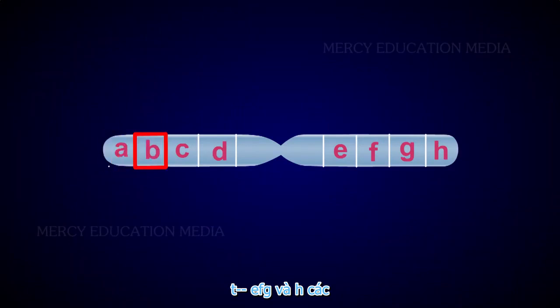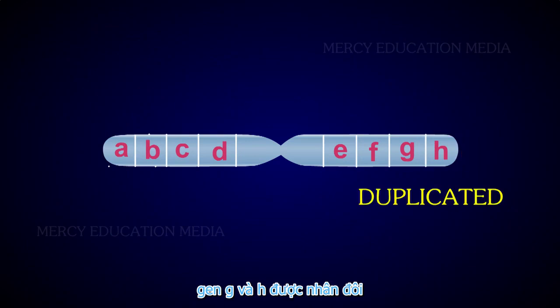A, B, C, D, E, F, G, and H. The genes G and H are duplicated.